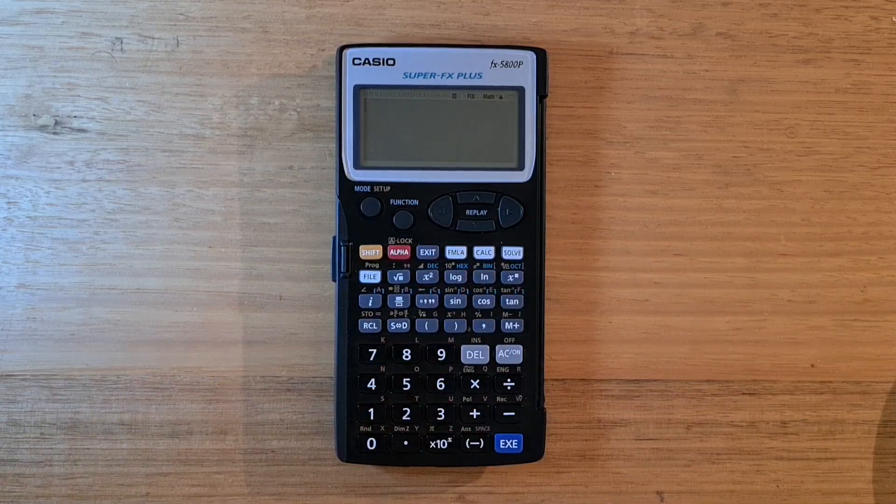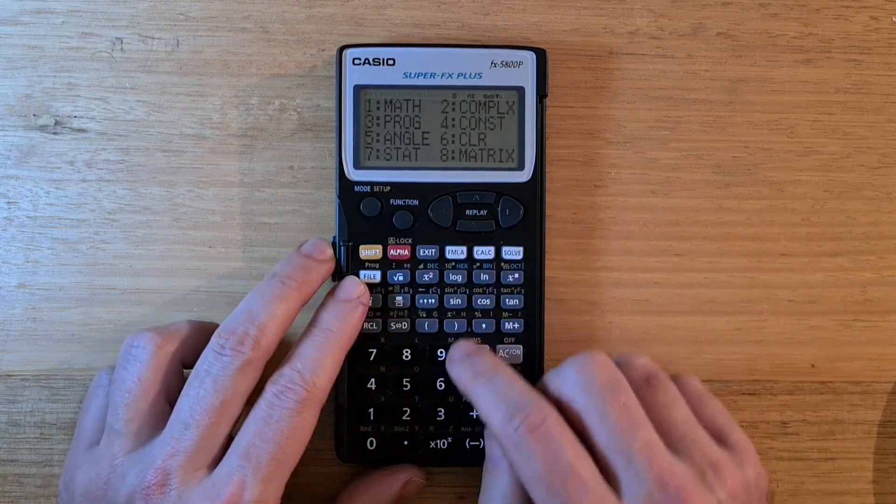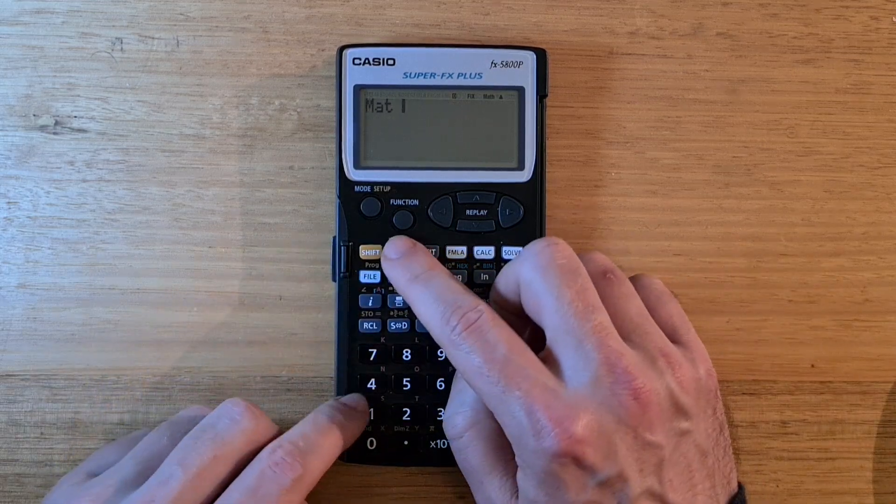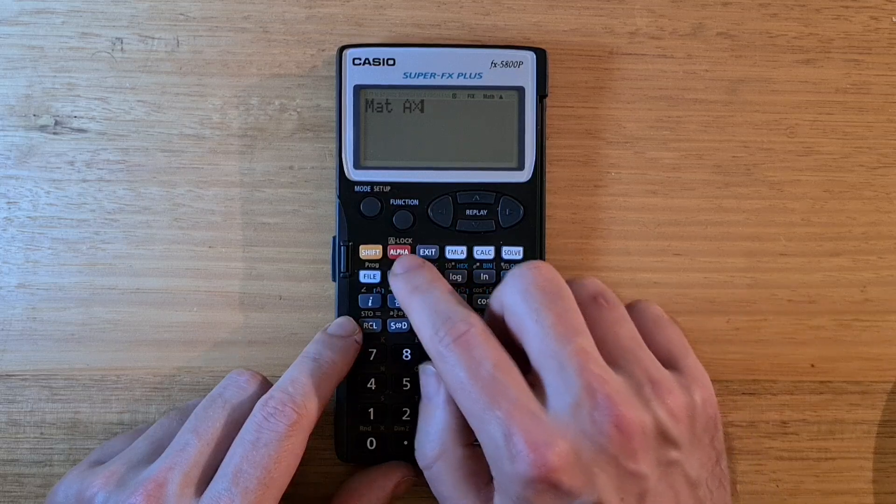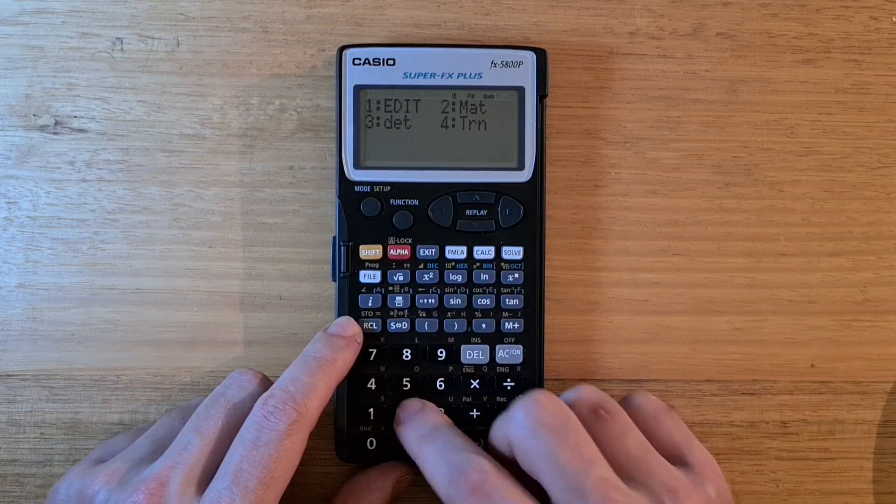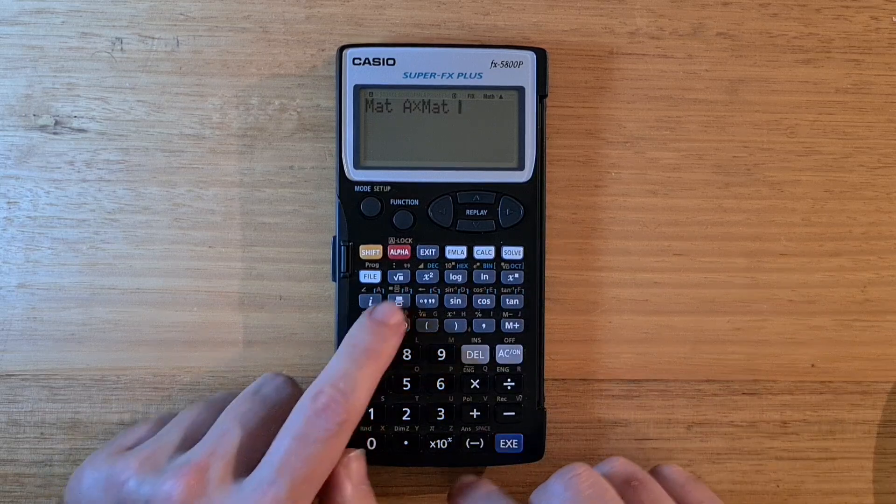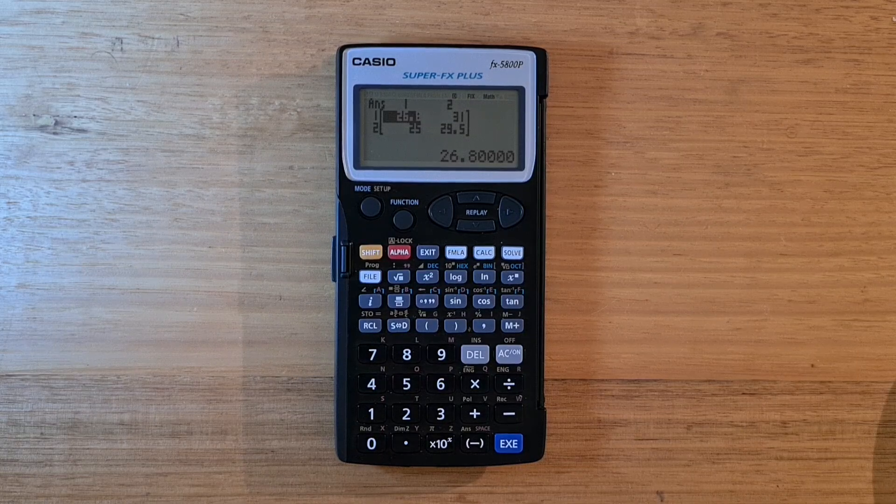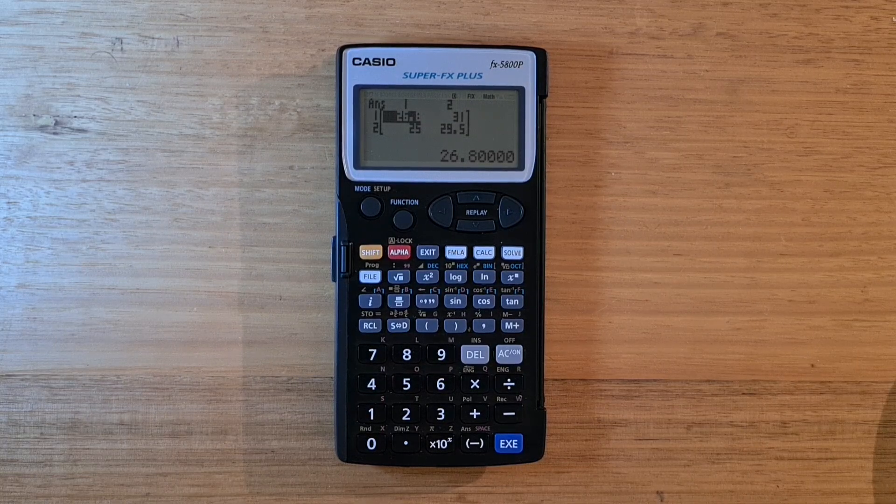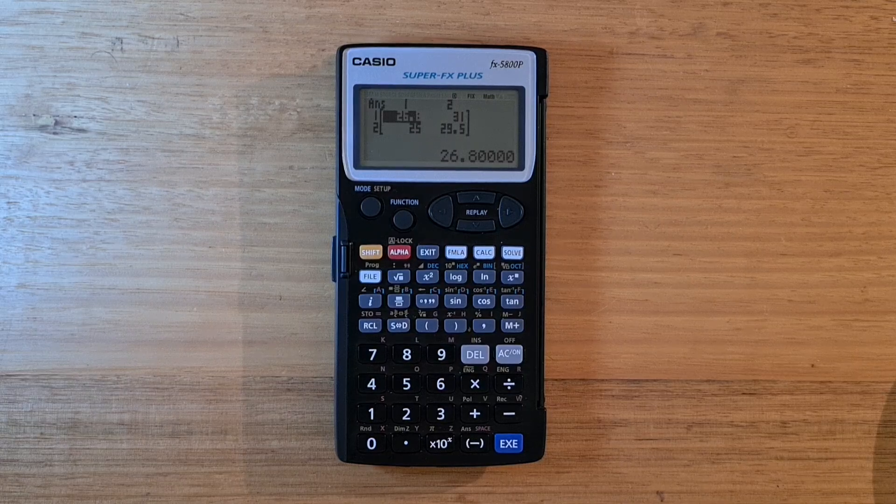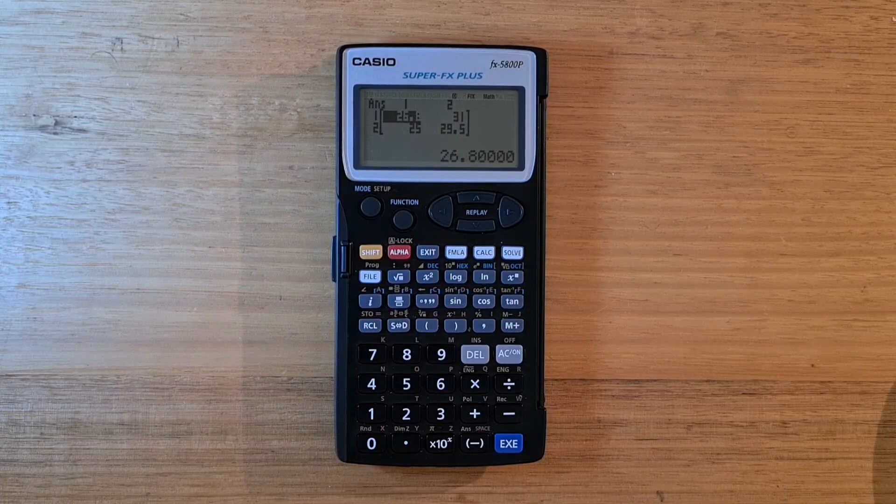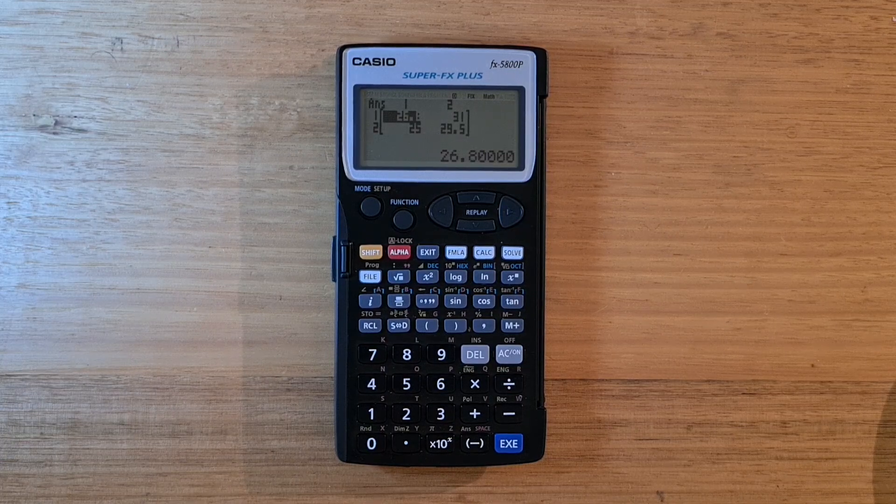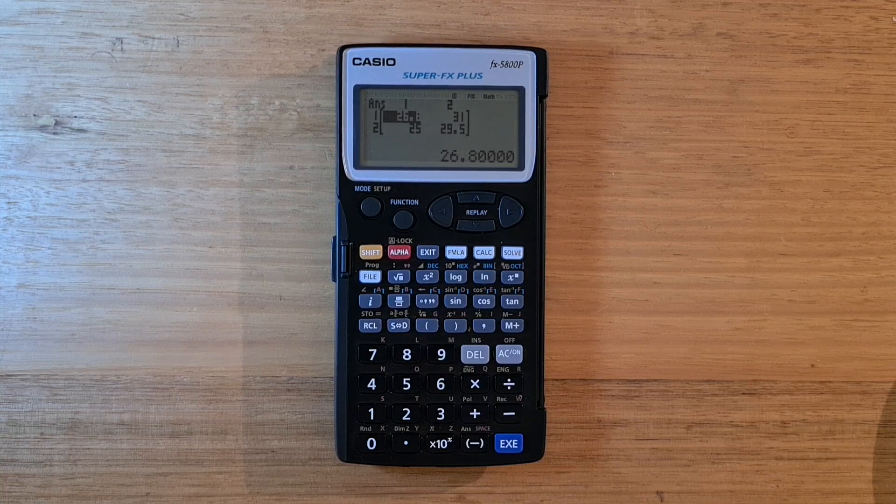And again, using functions from the matrix menu. So say if we wanted to multiply matrix A and matrix B, we go function 8, and then select the matrix operation, hit alpha A, and then multiply. And then function 8, matrix alpha B. And then it drops me back into table view. And this type of experience where you're drilling into menus a lot is quite typical on the 5800P. And the 5800P doesn't support complex matrices. So again, this may be limiting.